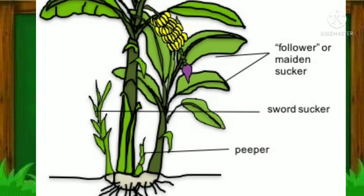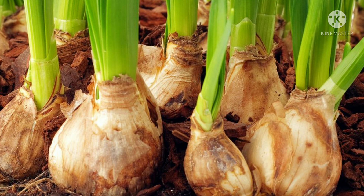A bulb contains an underground stem with leaves attached to it. These leaves contain much stored food. At the center of the bulb is an apical bud, and also attached are lateral buds. The apical buds will produce leaves and flowers while the lateral buds will produce new shoots. As the plant grows and develops, it will form a new bulb underground. Examples are onion, tulips, and garlic.